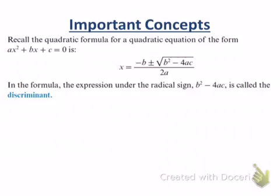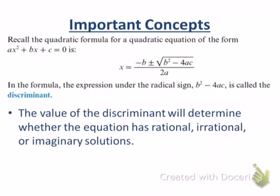So, the discriminant tells us lots of things about it. The value of the discriminant determines whether the equation has rational, irrational, or imaginary solutions, and it also determines how many solutions that we have, and we'll look at that in just a second.